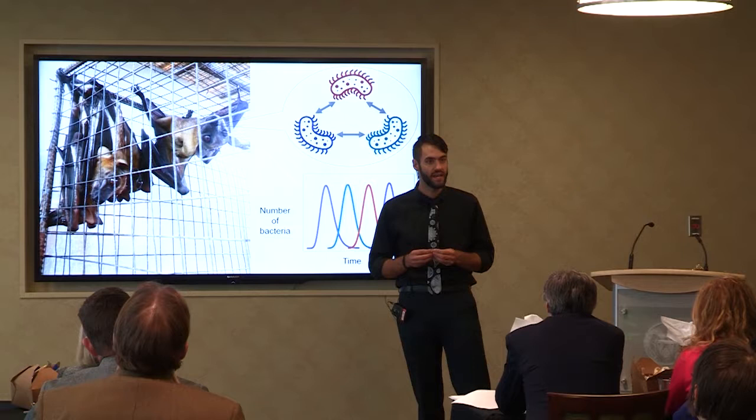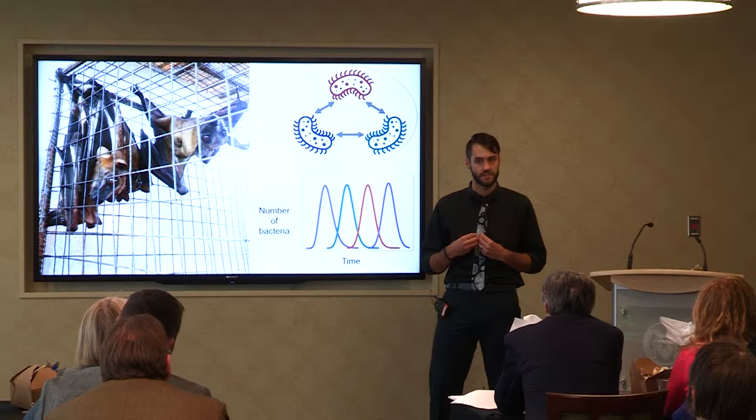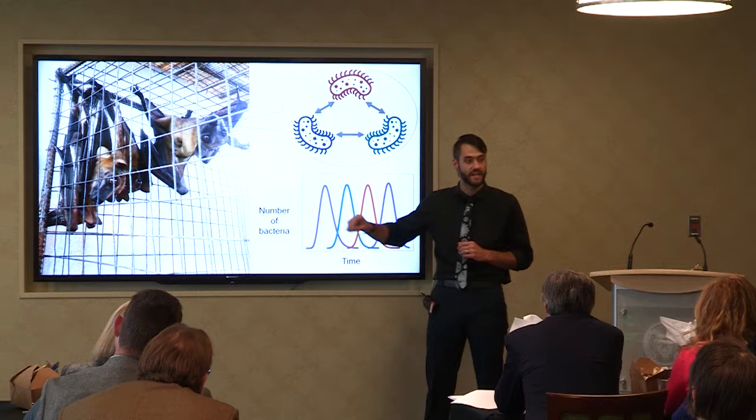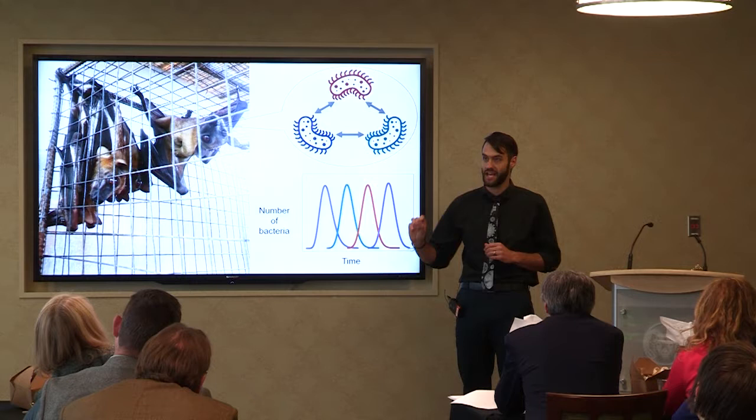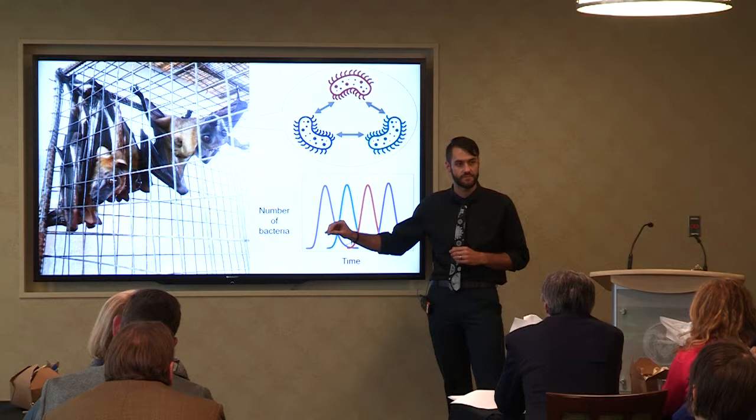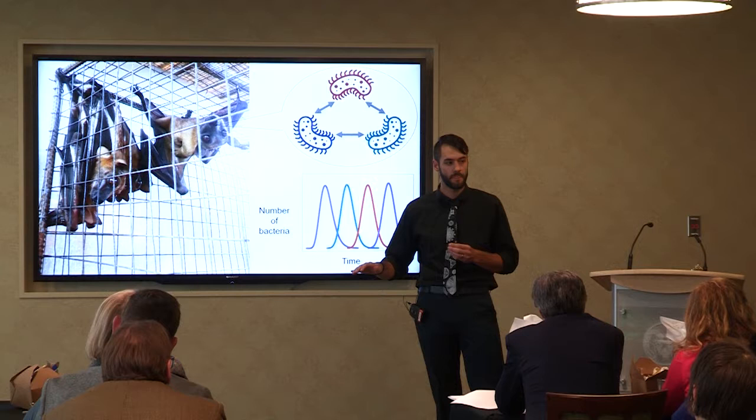By studying co-infections, we can begin to understand the strength of these interactions and possibly devise new therapies that can best complement their host's immune system. My research focuses on the co-infection dynamics of bacteria in African fruit bats. These bats can be infected with six different types of bacteria that grow in their red blood cells. These bats are a great system to work with because they're so frequently co-infected and their infections last a very long time.